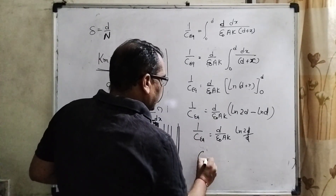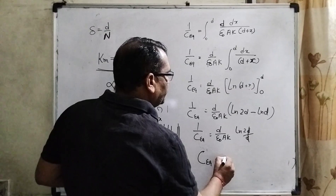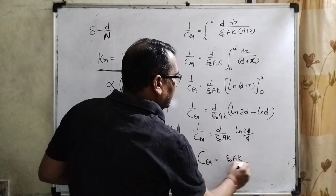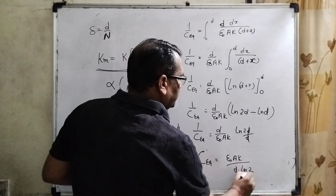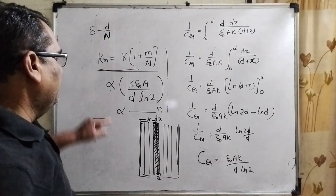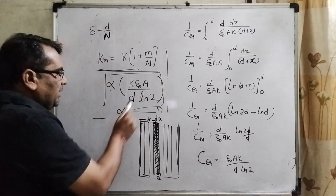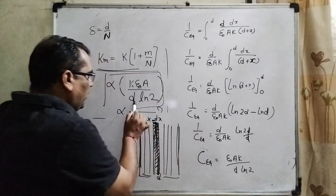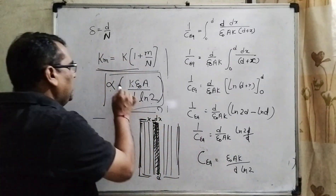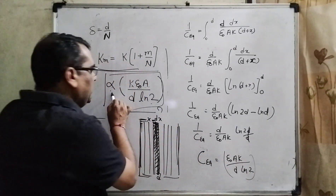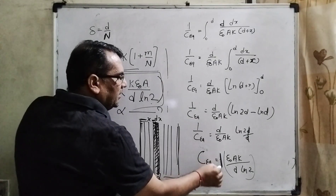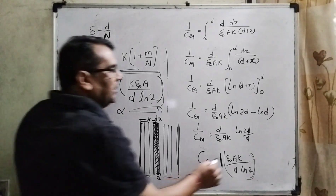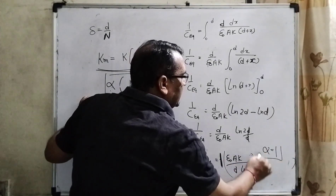Taking the reciprocal, the equivalent capacitance is equal to K·ε₀·A divided by d·ln2. Now, we have already been given the form alpha times K·ε₀·A over d·ln2. By comparing these two expressions, you can see that there is no additional numerical value, so alpha equals 1. That is our answer.